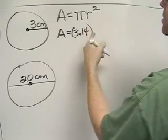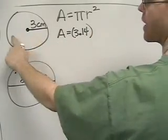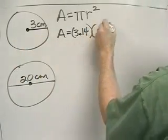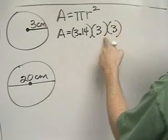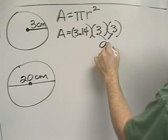r squared means the radius times the radius again. In this case, the radius is 3, so we're going to multiply 3 times 3 again. We know that 3 times 3 is 9,